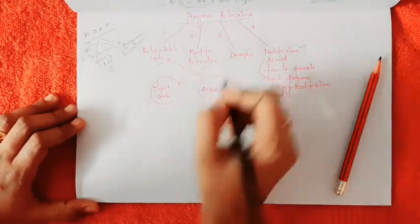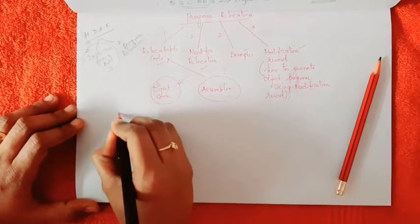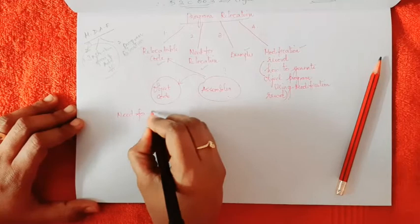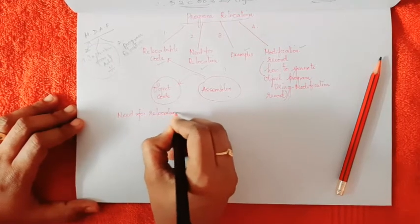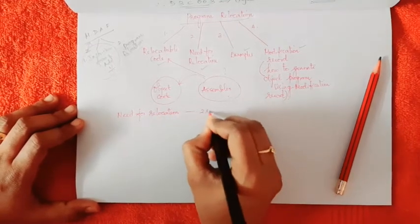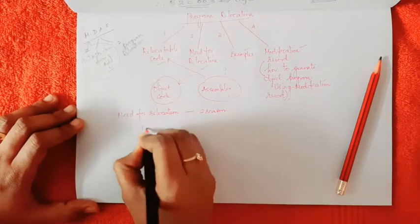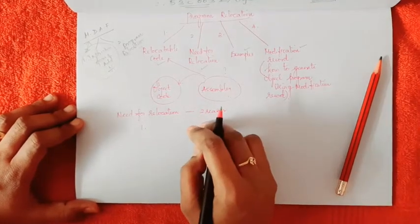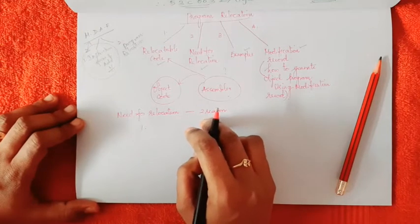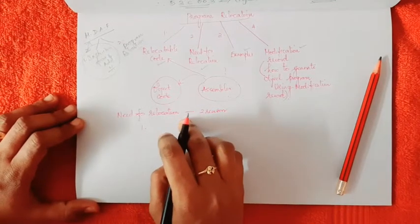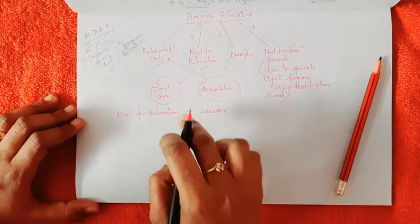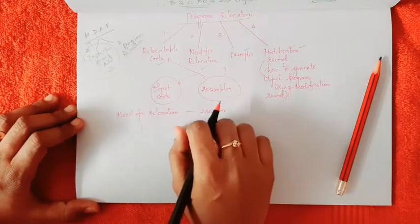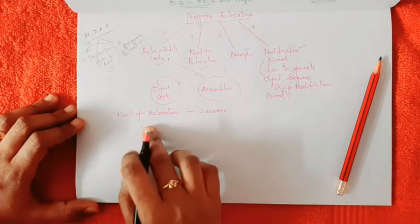Now we will see what is the need for relocation. There are two reasons. The first reason is the assembler does not know where the object code will be located in memory, so it generates a relocatable code. In this case, the loader helps the assembler to load the object module in memory anywhere.